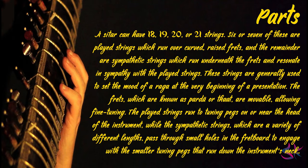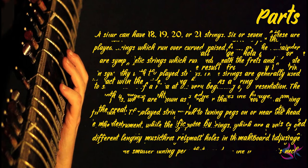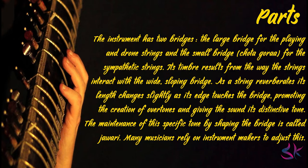The frets, which are known as Partha or That, are movable, allowing fine tuning. The playing strings run to tuning pegs on or near the head of the instrument, while the sympathetic strings pass through small holes in the fretboard to engage with the smaller tuning pegs that run down the instrument's neck. The instrument has two bridges: the large bridge Bada Gora for playing and drone strings, and the small bridge Chota Gora for the sympathetic strings. Its timbre results from the way the strings interact with the wide sloping bridge, promoting the creation of overtones and giving the sound its distinctive tone.